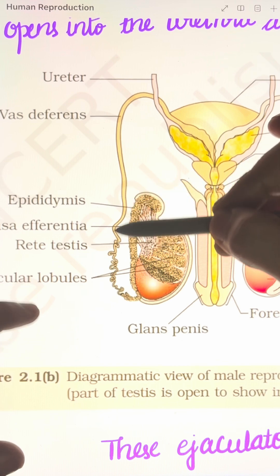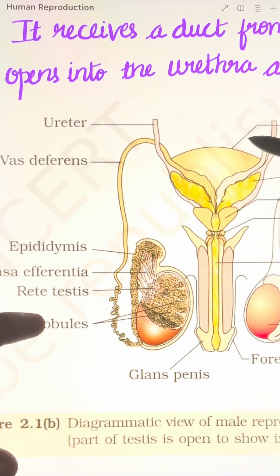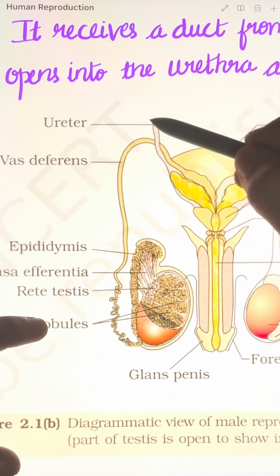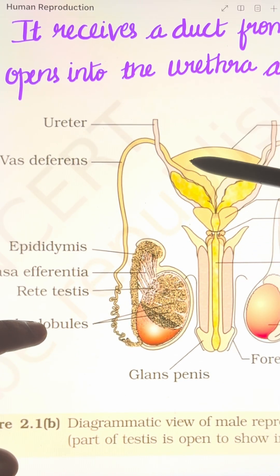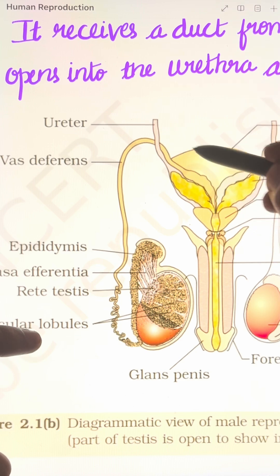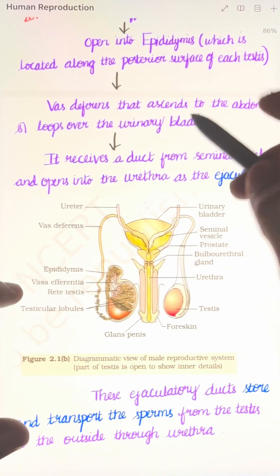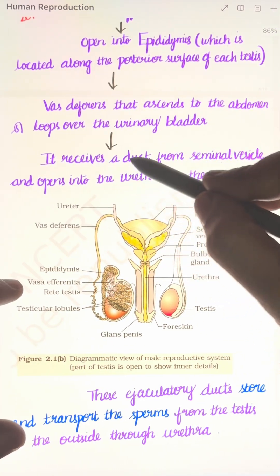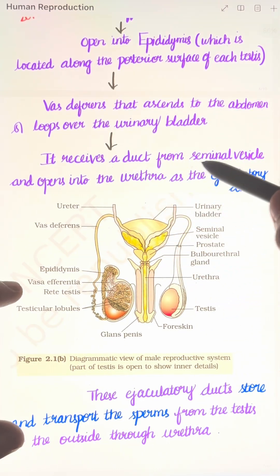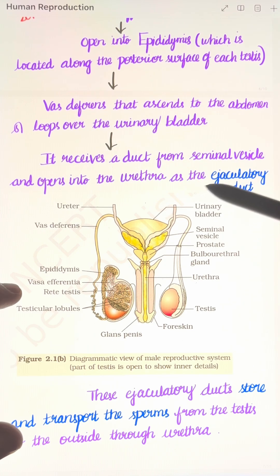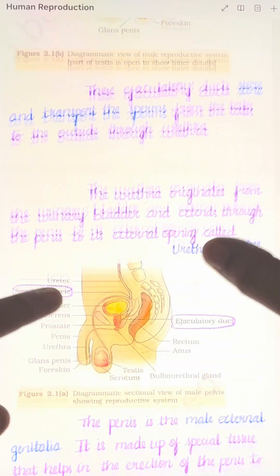From the epididymis, the sperm ascends to the abdomen through the vas deferens. It ascends to the abdomen and loops over the urinary bladder.